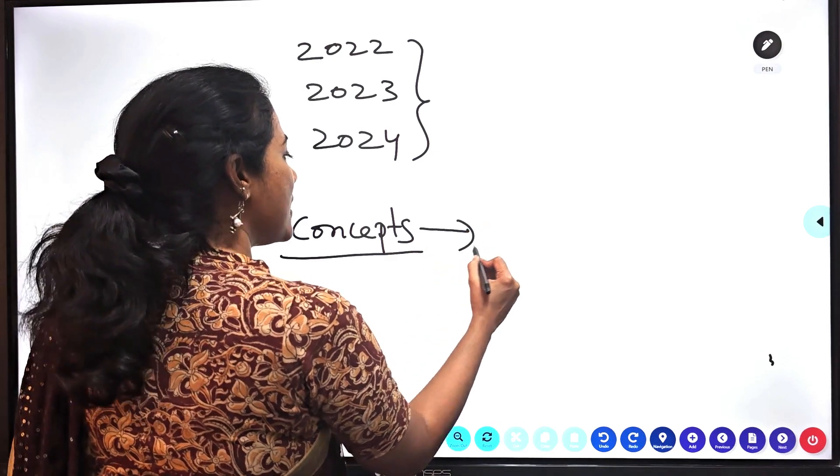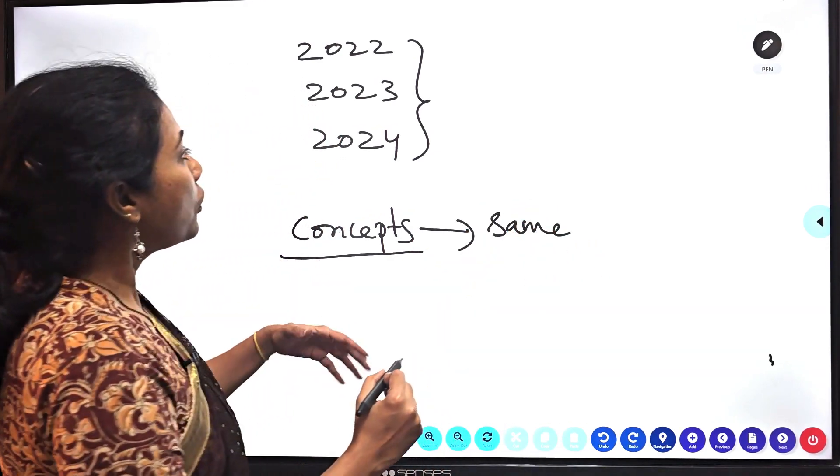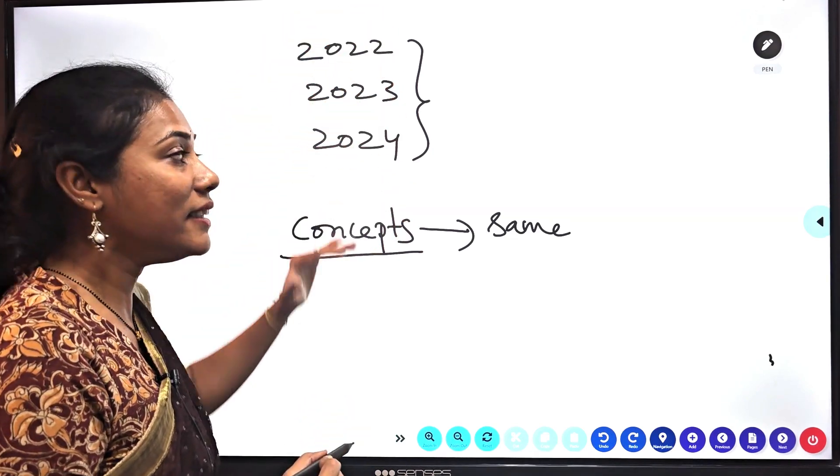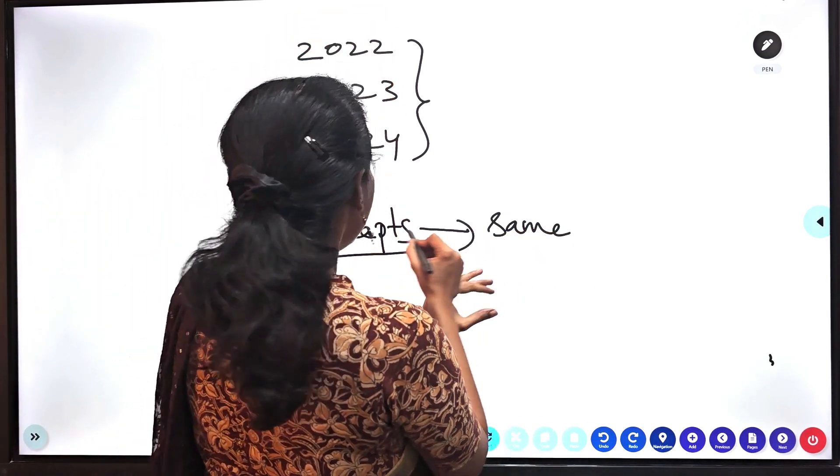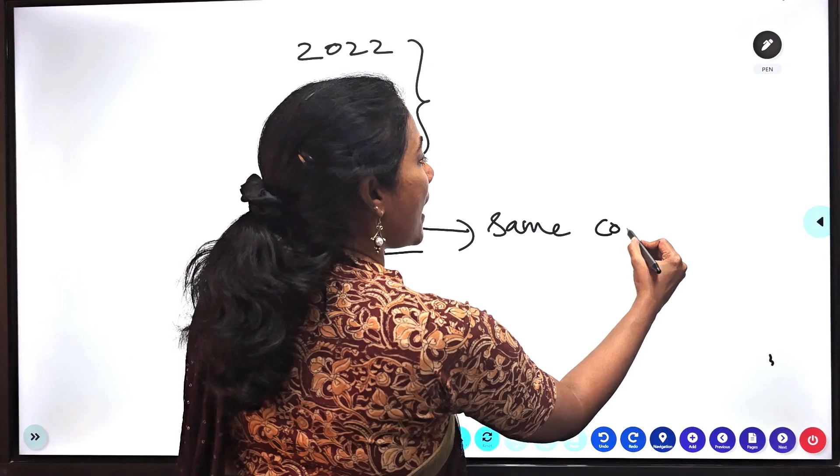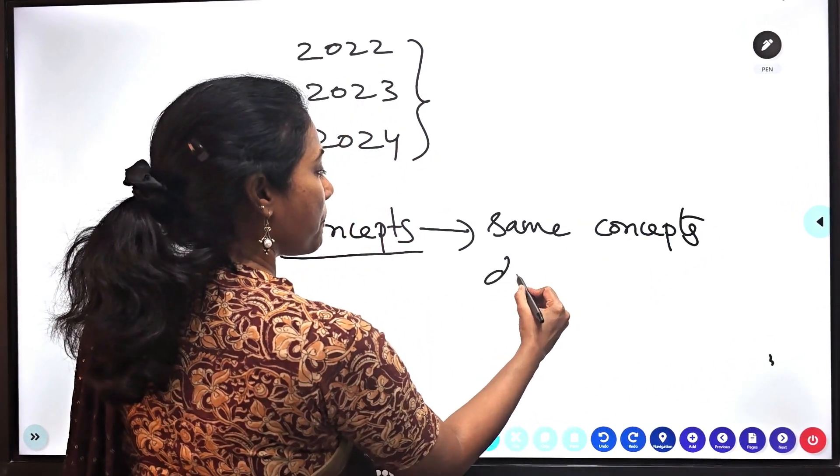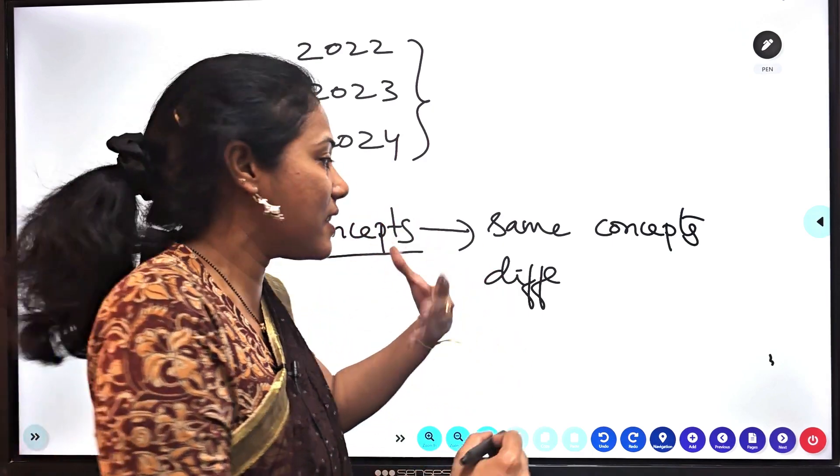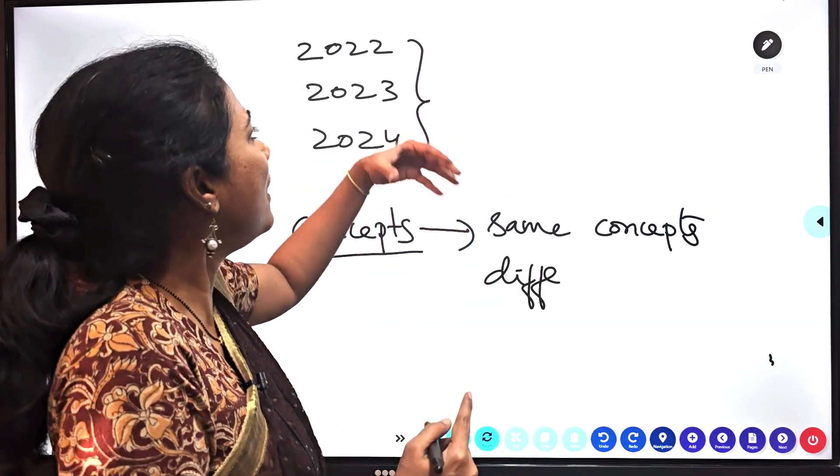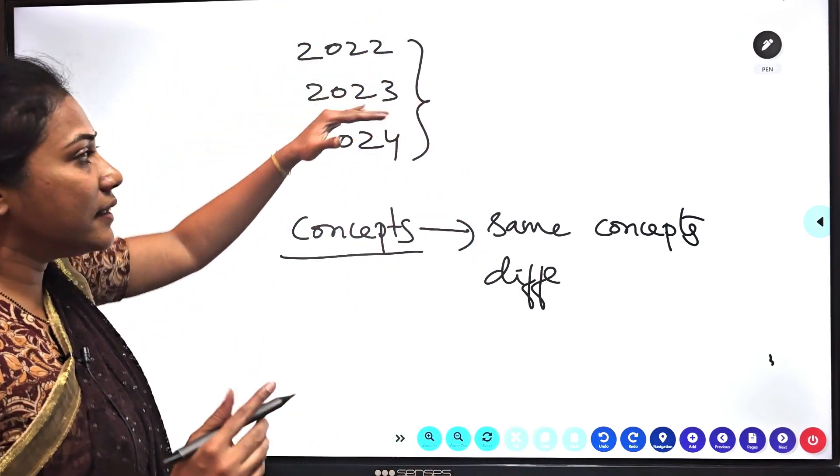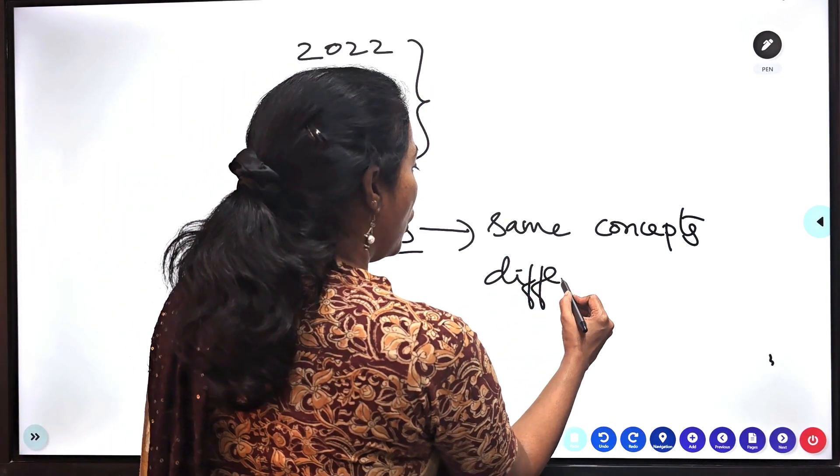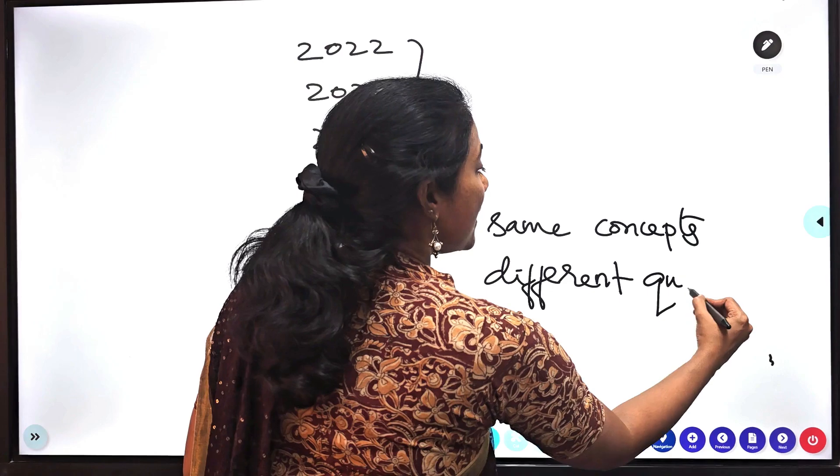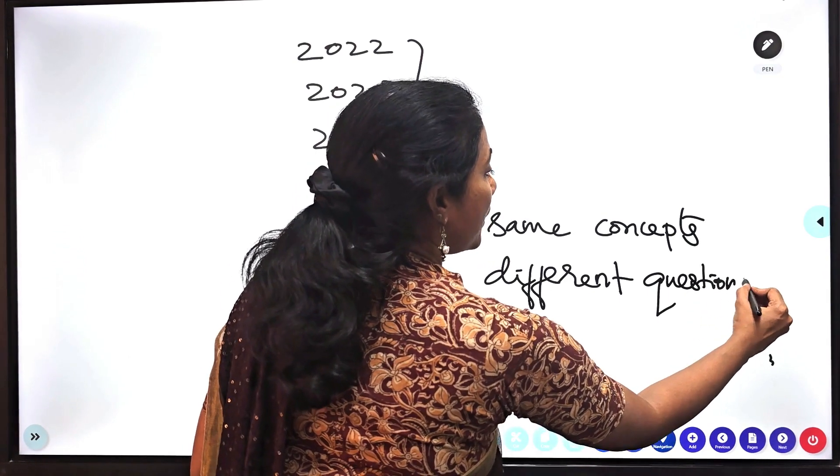From the same concepts, I found questions from the same concepts in all the years. So same concepts but different questions. They took the same concept, but questions they asked differently. You don't find the same question in all the three papers. Questions were different, but the concept was same. So this is the pattern I have identified.